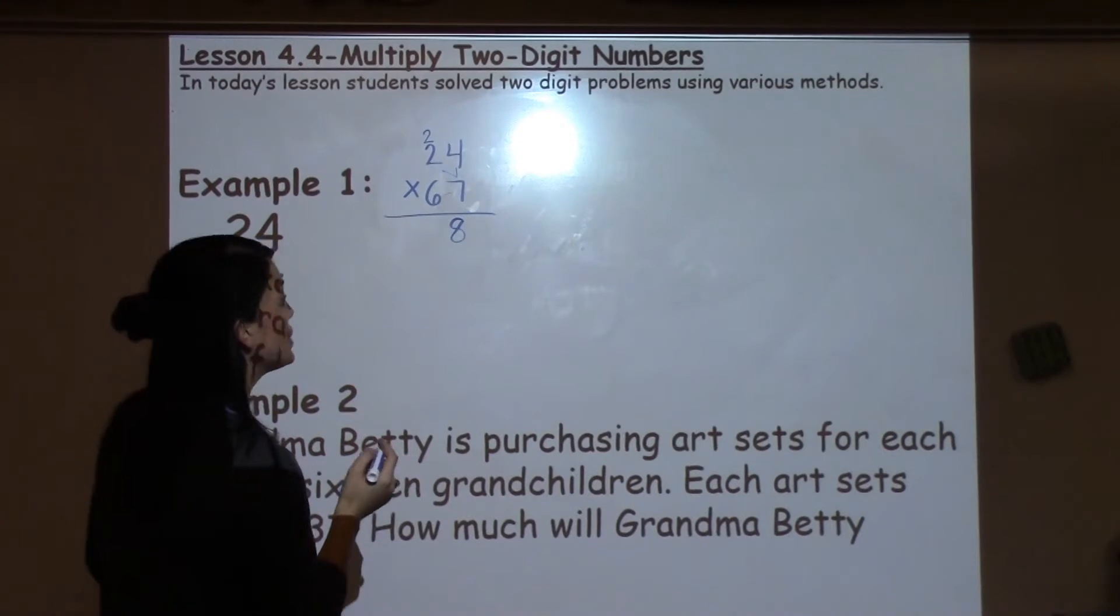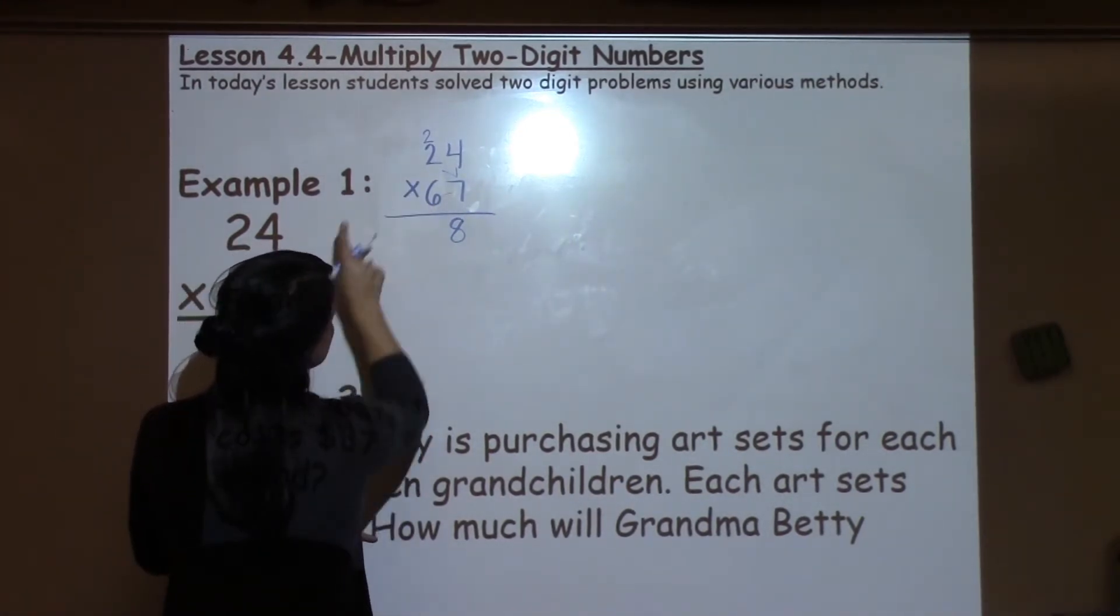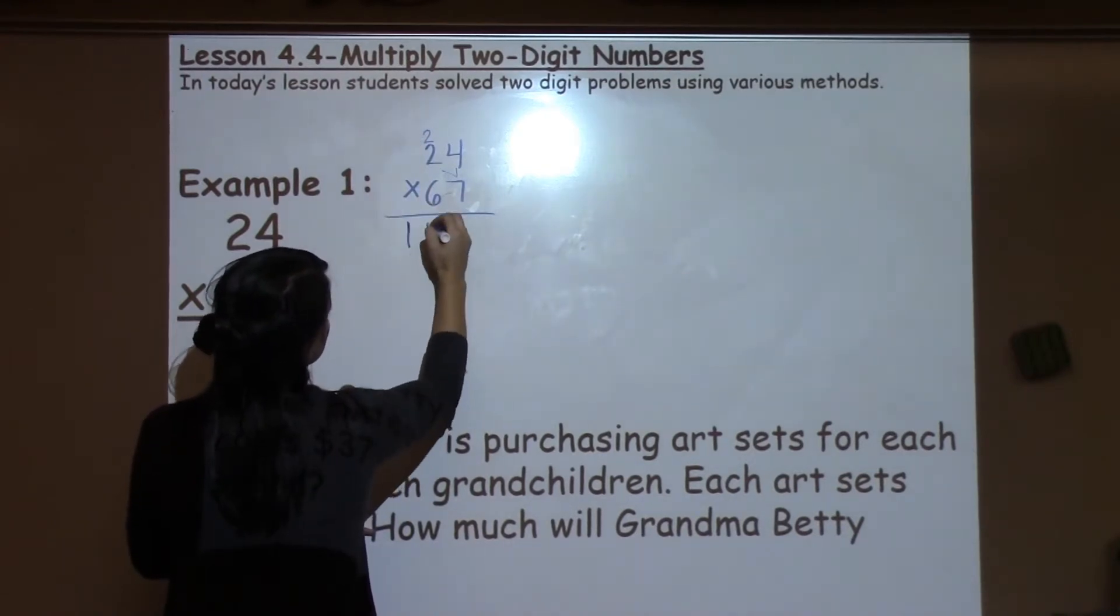7 times 2 is what I'm moving on to now. 7 times 2 is 14 plus the extra 2 that I carried over is going to be 16.